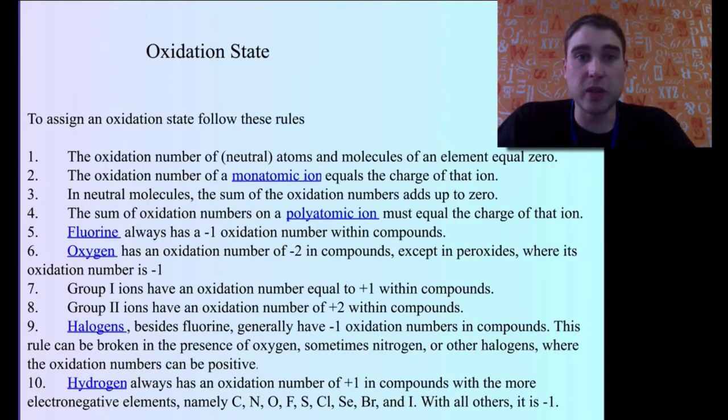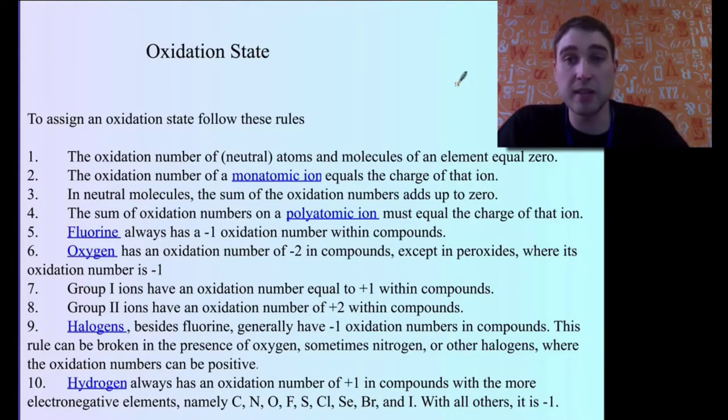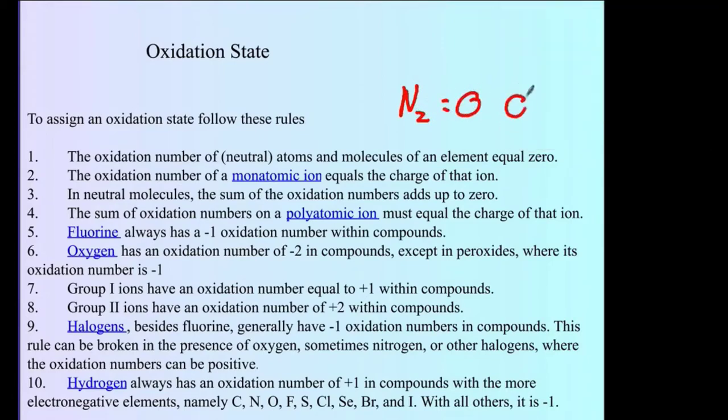So there's a series of rules that we follow to figure out the oxidation number of a substance. We'll go through these in order. The oxidation number of neutral atoms or molecules of an element is equal to zero. That means something like nitrogen gas, the total oxidation number would be zero. Oxygen gas, the oxidation number would be zero.